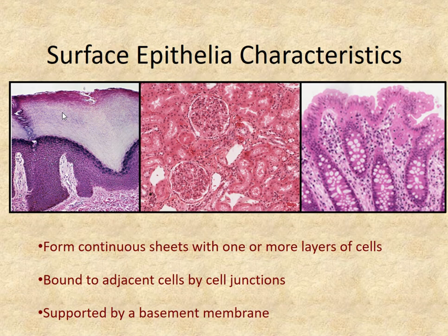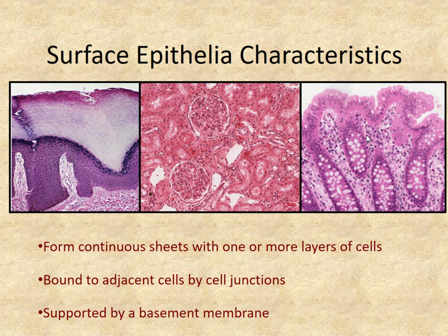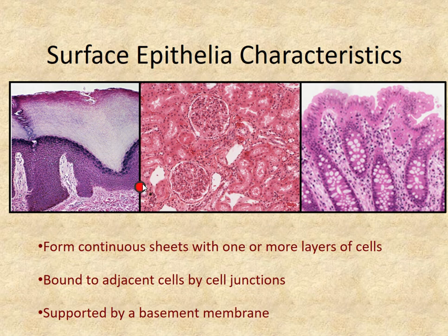All surface epithelial cells form a continuous sheet — they're all connected to each other, meaning they have a lot of junctions between the cells. The epithelial cells really use a lot of junctions to stay as one continuous sheet. Another characteristic is that underneath the epithelium there's always a structure called a basement membrane, which is supporting connective tissue underneath. This supporting connective tissue is responsible for getting all metabolites to the cells and all waste products away from the cells. It also has a lot of junctions that allow the epithelium to stay adhered to the rest of the organ.